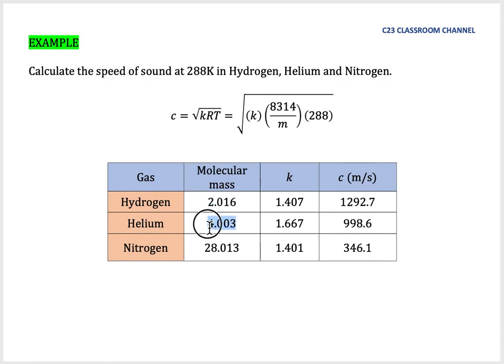In helium, the molecular mass is increased and the speed of sound is lower, becoming 998.6 m/s. For nitrogen at 28, with k of 1.401, you get the speed of sound around 346 m/s.